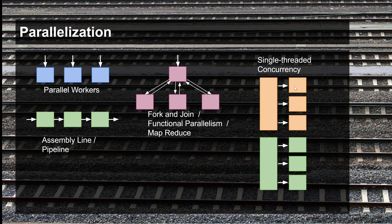A little bit of this task, then an increment of the next, then an increment of the next — sequentially, not in parallel. However, if you run multiple single-threaded concurrency instances in parallel, you can achieve parallelization, but the model then becomes more similar to the parallel workers model, except that inside each worker, single-threaded concurrency is taking place.